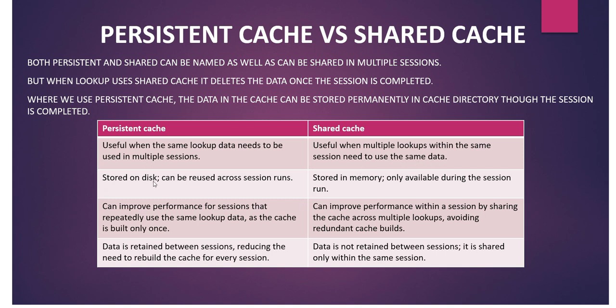Persistent cache is stored on disk and can be used across session runs. Shared cache is stored in memory only and is available only during the session run. Persistent cache improves performance of sessions that repeatedly use the same lookup data, as the cache is built only once. Shared cache improves performance within a session by sharing the cache across multiple lookups, avoiding redundant cache building. In persistent cache, data is written between sessions reducing the need to rebuild; in shared cache, data is not written between sessions.